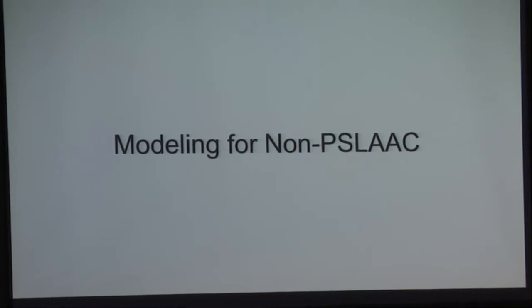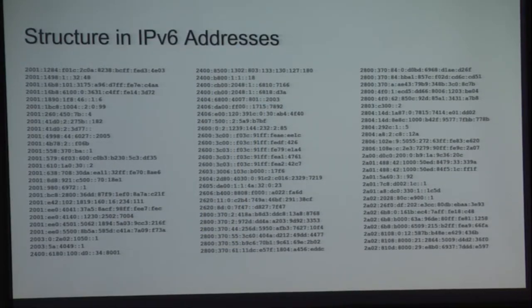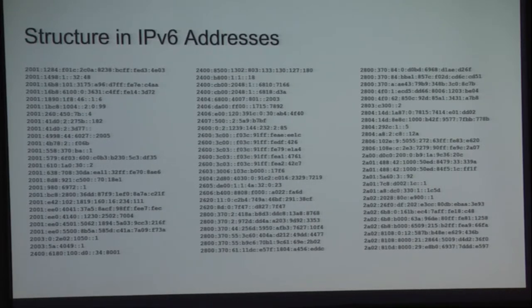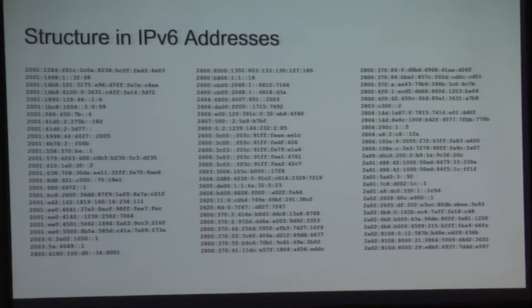It's not every day you learn that a significant part of your research project was completely wrong — so that was fun, but it's a learning experience. Having removed the high-entropy addresses from the equation, let's look at the ones that don't have a lot of entropy. Here is a list of IPv6 addresses from public data sets, sorted. If you squint your eyes, you might notice there's a decent amount of structure in these addresses. Humans allocate them in patterns they recognize, bring learnings from IPv4, and organize them. There's actually a separate paper that found six different clusters of how addresses are laid out.